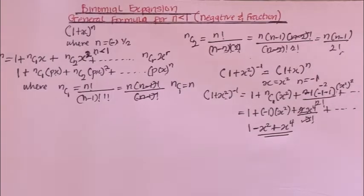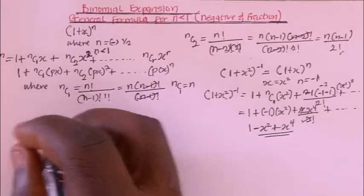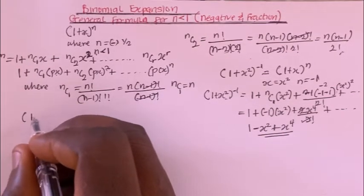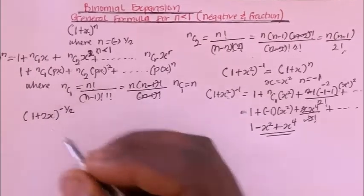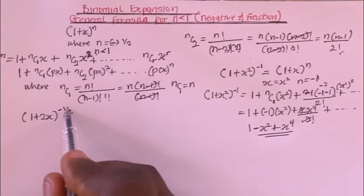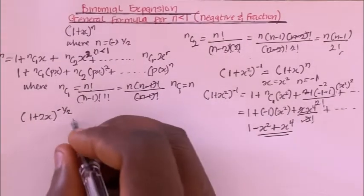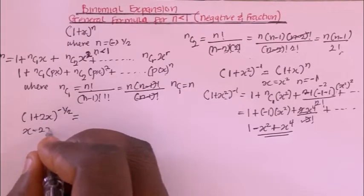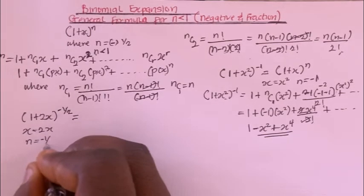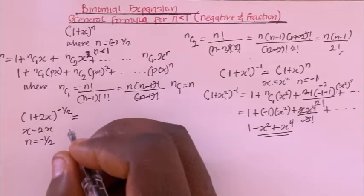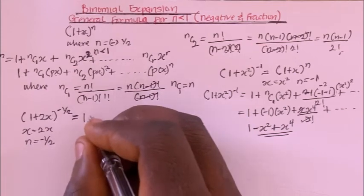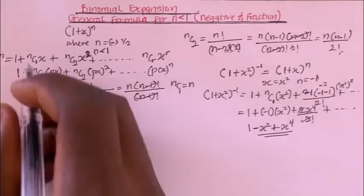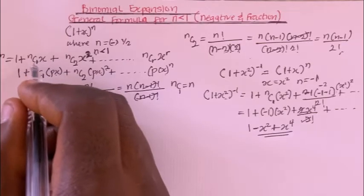Let me give you another question. You are asked to expand (1 + 2x)^(−1/2). This is also a negative binomial — look at the negative value here. In this case, our x equals 2x and our n equals −1/2. We'll expand up to degree 2.